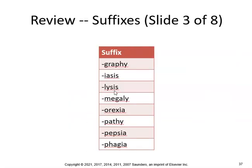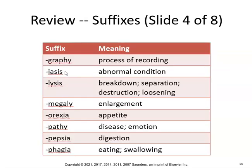Continuing the suffix review: graphy is the process of recording. Iasis is an abnormal condition. Lysis — breakdown. Megaly is enlargement. Orexia means appetite. Pathy means disease. Pepsia means digestion. Phagia means eating or swallowing.